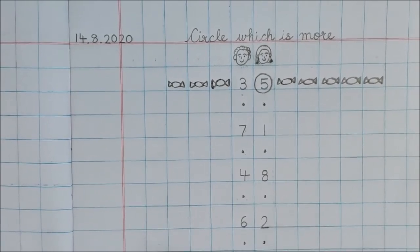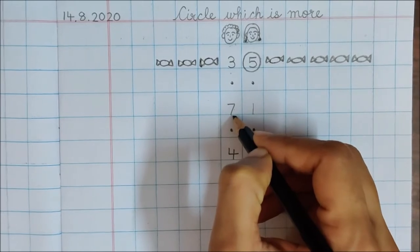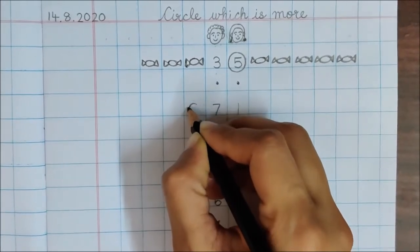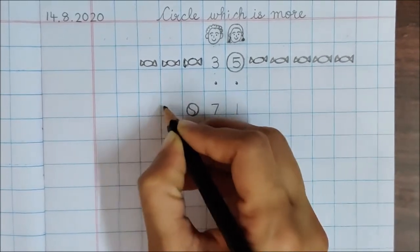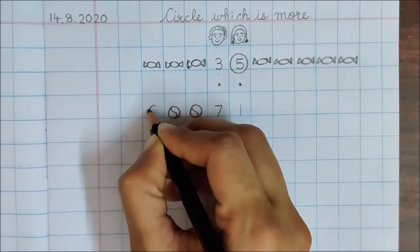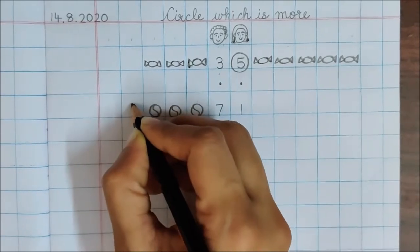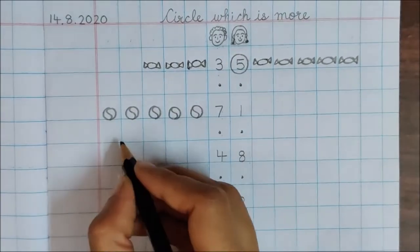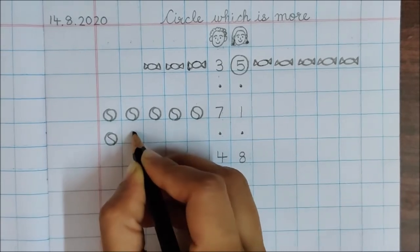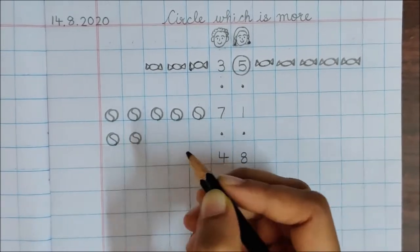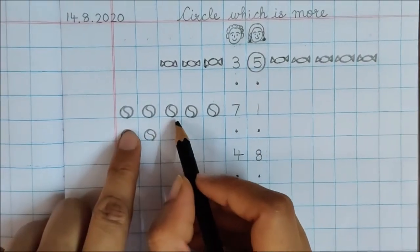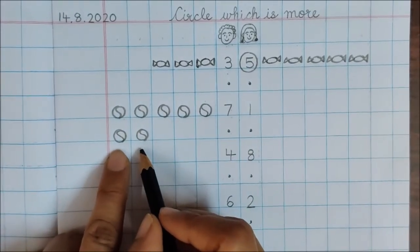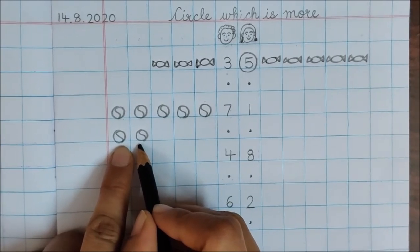Now let us go to the next number. Now your papa got 7 balls for you. So draw your 7 balls. 1, 2, 3, 4, 5, 6, 7. Your papa got 7 balls for you. Look children. I drew 5 balls here and the remaining 2 balls I drew in the next line. So like this you will draw.